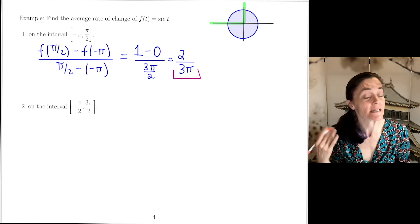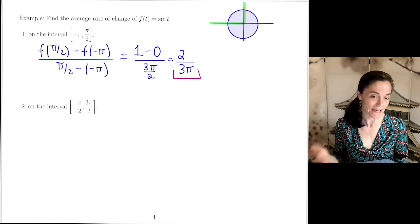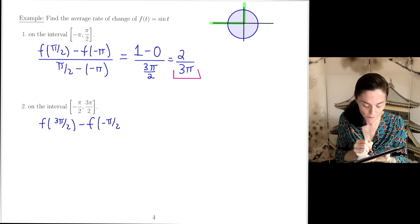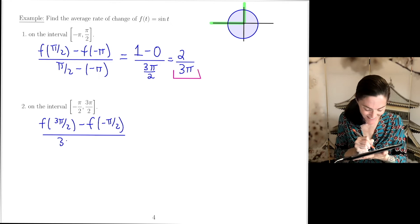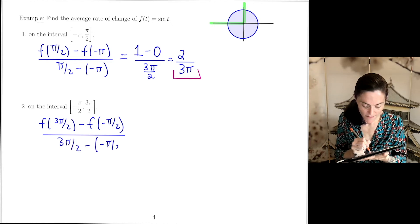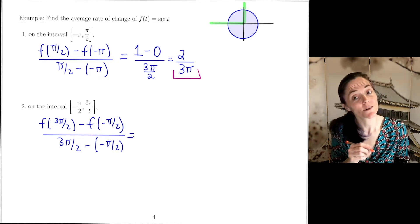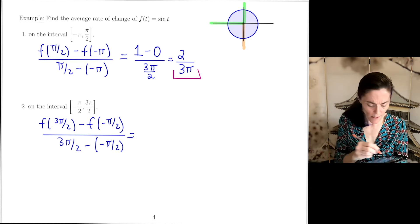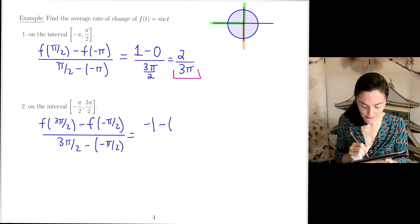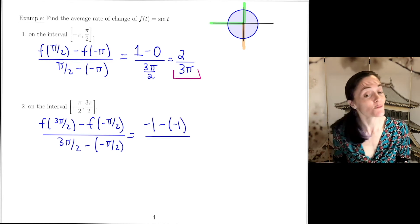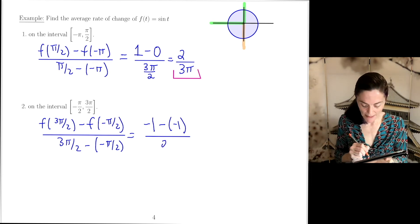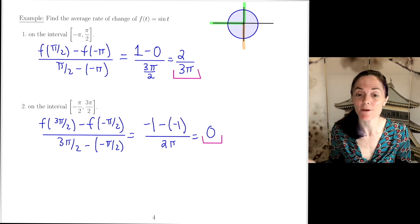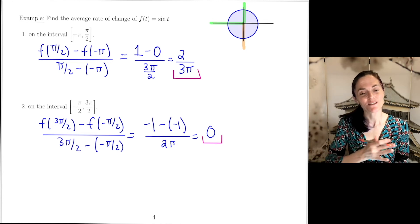For the second interval, the sine function on [−π/2, 3π/2]: we compute (f(3π/2) − f(−π/2)) / (3π/2 − (−π/2)). From the unit circle, sin(3π/2) = −1 and sin(−π/2) = −1. So we have (−1 − (−1)) / (3π/2 + π/2) = 0 / (2π) = 0. The average rate of change is 0.